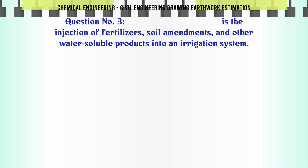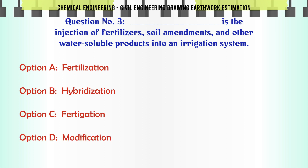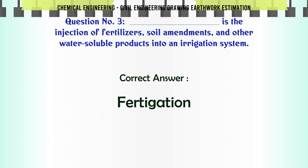Is the injection of fertilizers, soil amendments, and other water-soluble products into an irrigation system. A. Fertilization. B. Hybridization. C. Fertigation. D. Modification. The correct answer is: Fertigation.